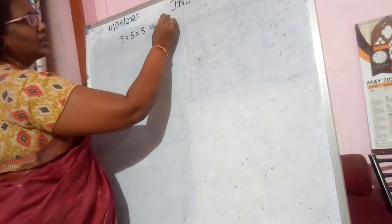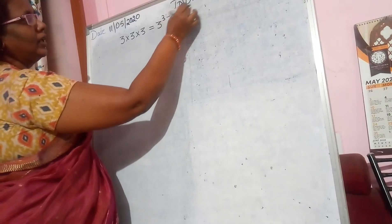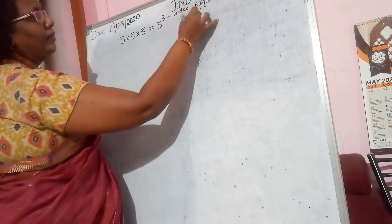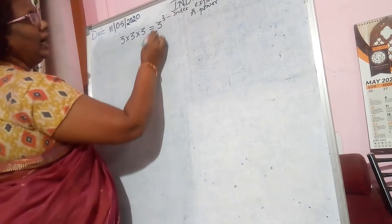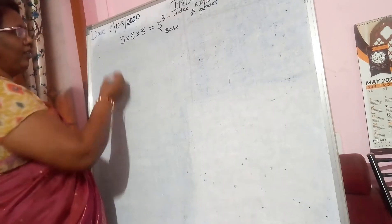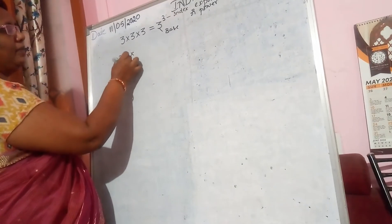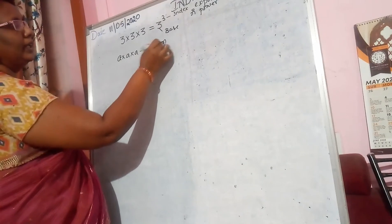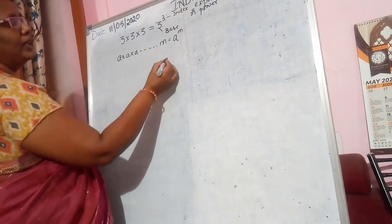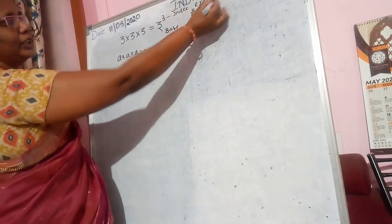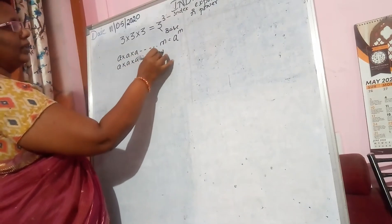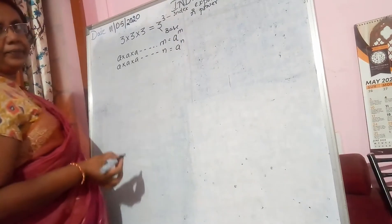Here 3 is called the Index, Exponent, or Power, and the base 3 is called the base. In the literal form, if a is repeatedly multiplied m times, we write a to the power of m. Then a is the base and m is the index or exponent.